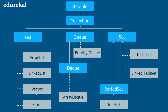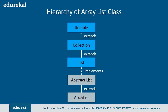Now talking about ArrayList — it uses a dynamic array for storing elements. It inherits the AbstractList class and implements the List interface. The List interface then extends the Collection and Iterable interfaces in hierarchical order. So this is the hierarchy of the ArrayList class.